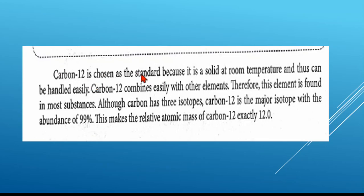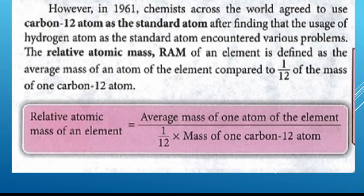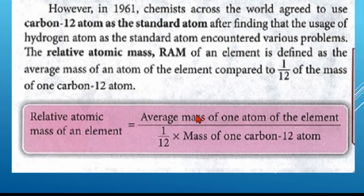So we use carbon-12 as the standard, and the relative atomic mass of carbon-12 is 12. For example, 1/12 times the mass of one carbon-12 atom: 1/12 times 12 equals 1. So if the average mass of one atom of helium is 4, then 4 divided by 1 gives a relative atomic mass of helium equal to 4.